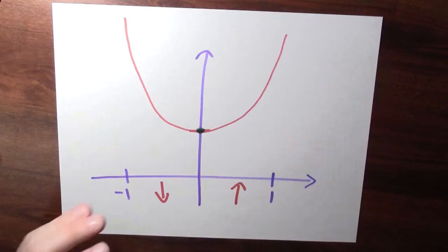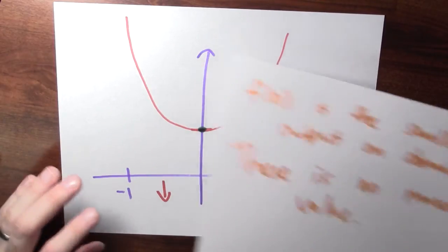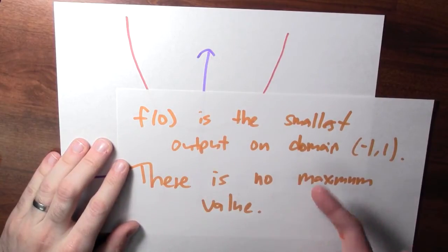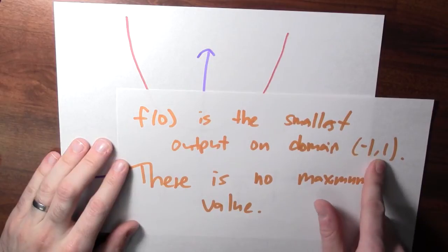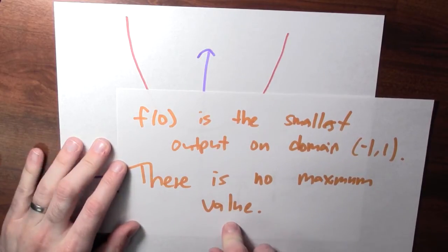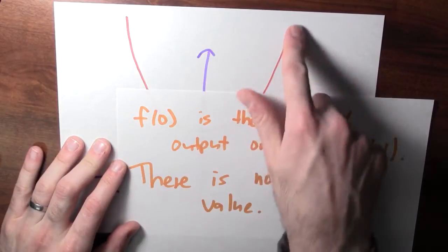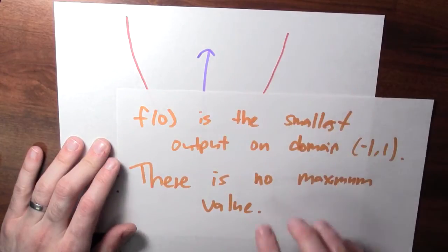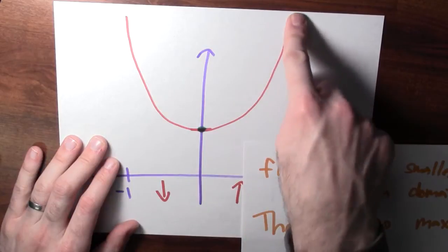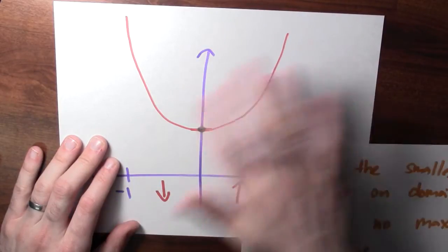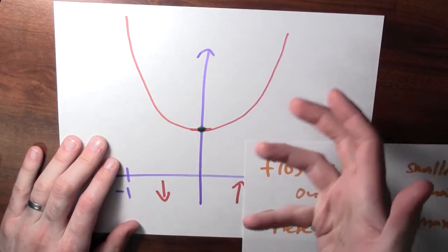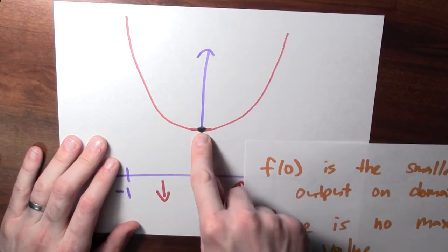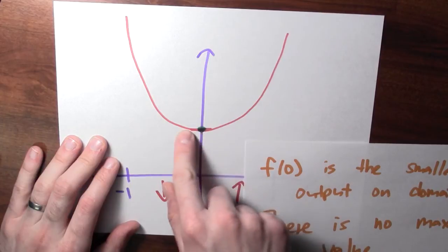To summarize: f of 0 is the smallest output — the minimum value the function achieves on the open interval from minus 1 to 1. There is no maximum value. By considering the limiting behavior as x approaches the endpoints, the function's output can be made as large as desired. So this function doesn't achieve a maximum, but it does achieve a minimum at x equals 0, where the output is 1.